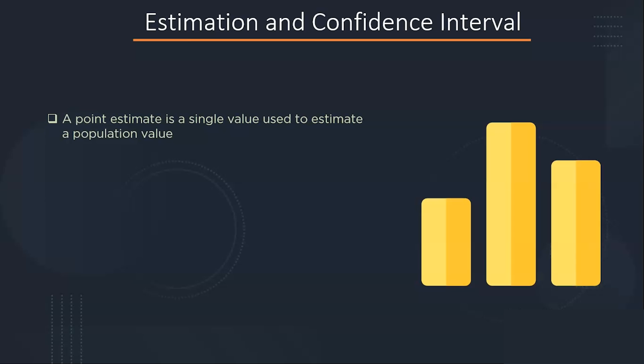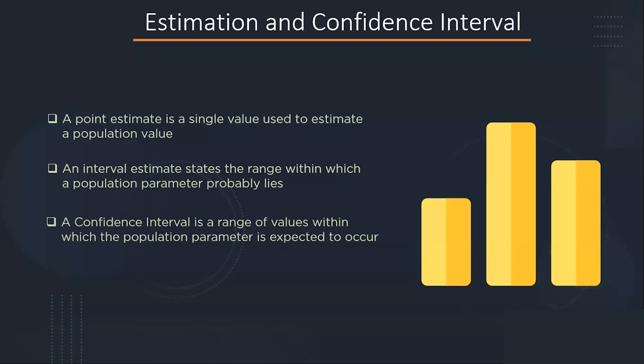A point estimate is a single value estimate of a parameter. For instance, a sample mean is a point estimate of a population mean. An interval estimate gives you a range of values where the parameter is expected to lie. A confidence interval is the most common type of interval estimate. Both types of estimate are important for gathering a clear idea of where a parameter is likely to lie.